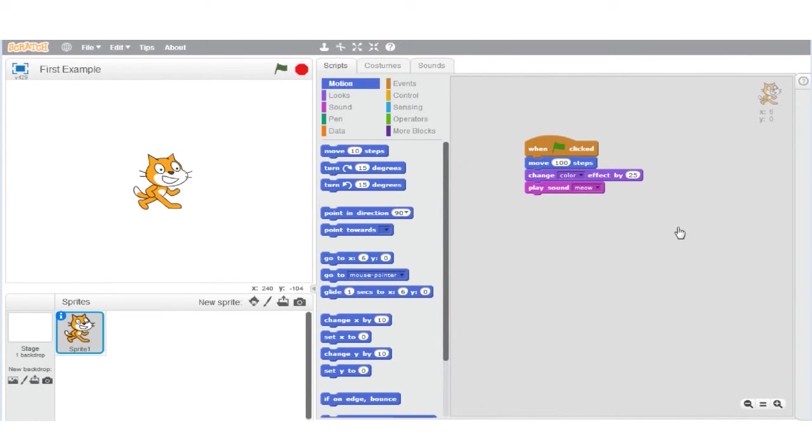So what I'll do is detach the play sound meow block from our script and introduce the if then block from the control palette.